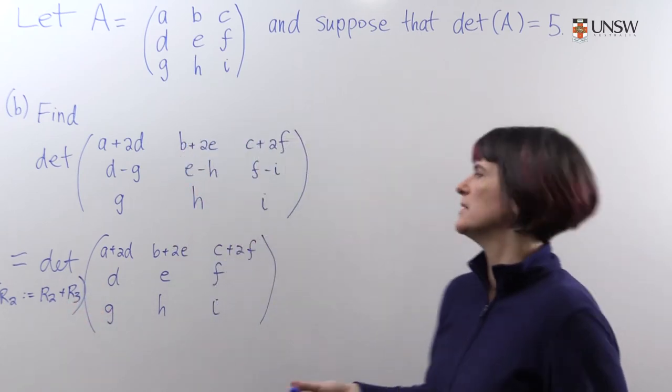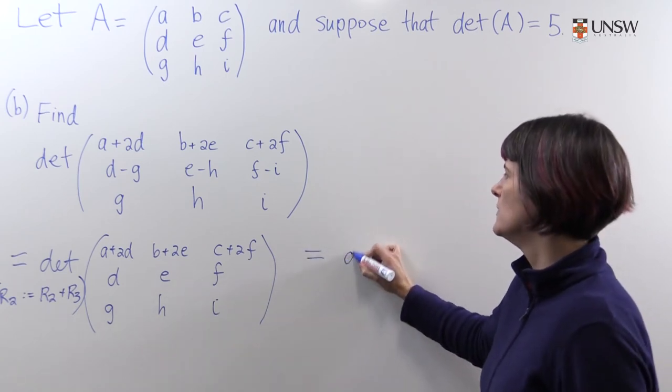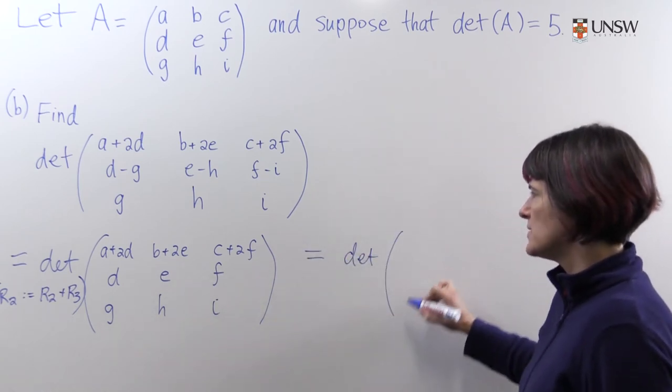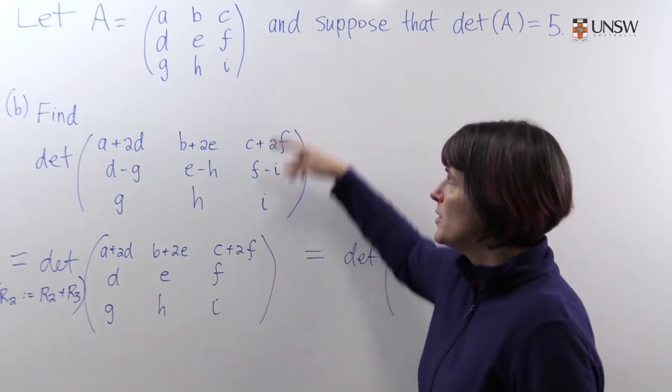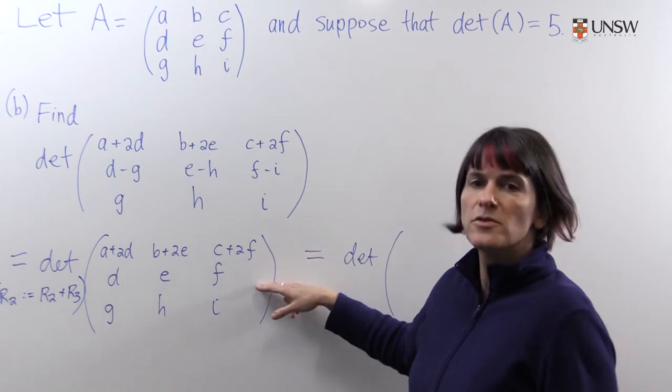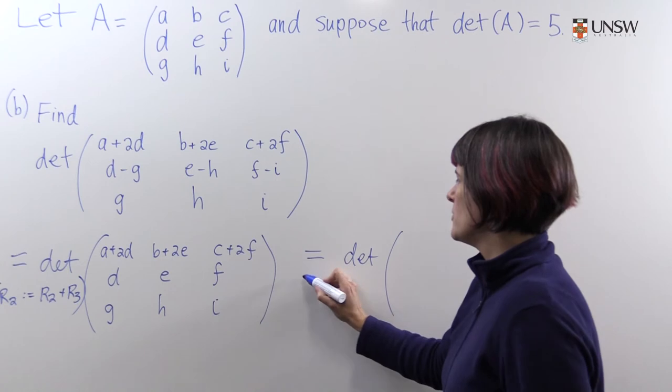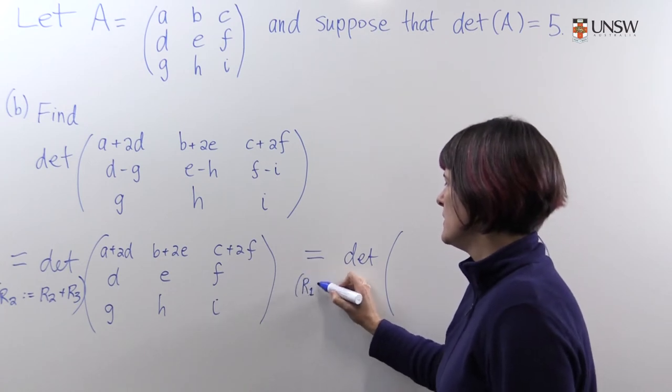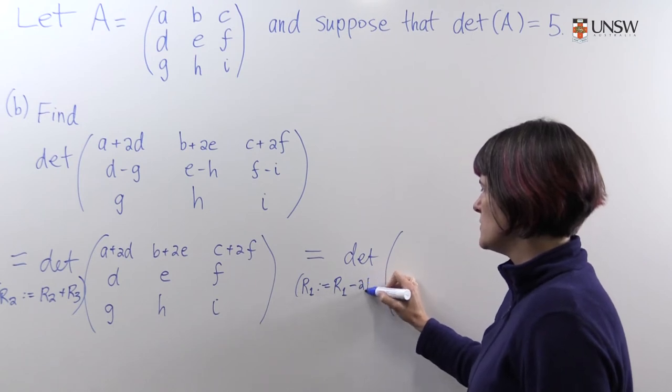So this is then going to be equal to the determinant of the matrix that you get by fixing up the first row. What should we do to it? We want to get A, B, C. So we should subtract twice row two from row one. The operation will be row one becomes row one minus two row two.